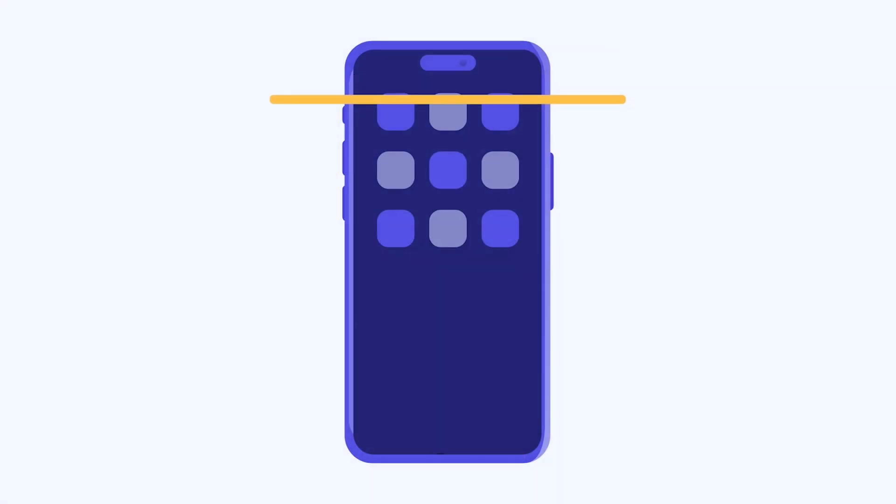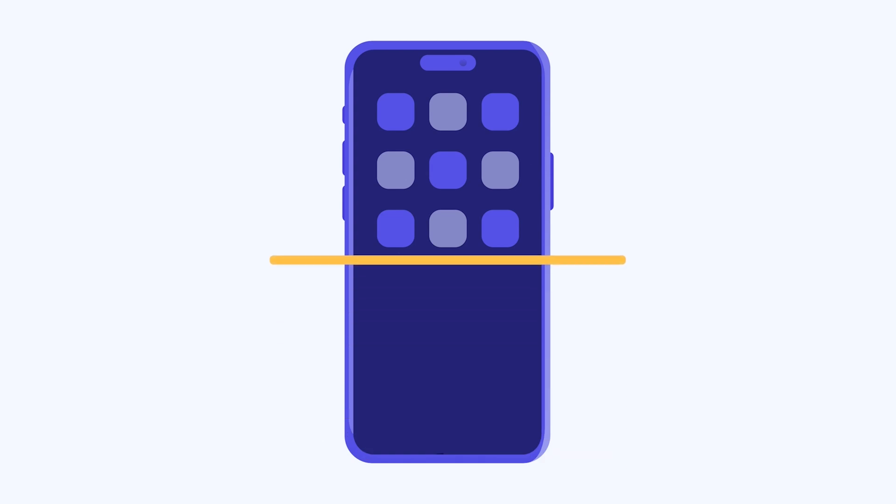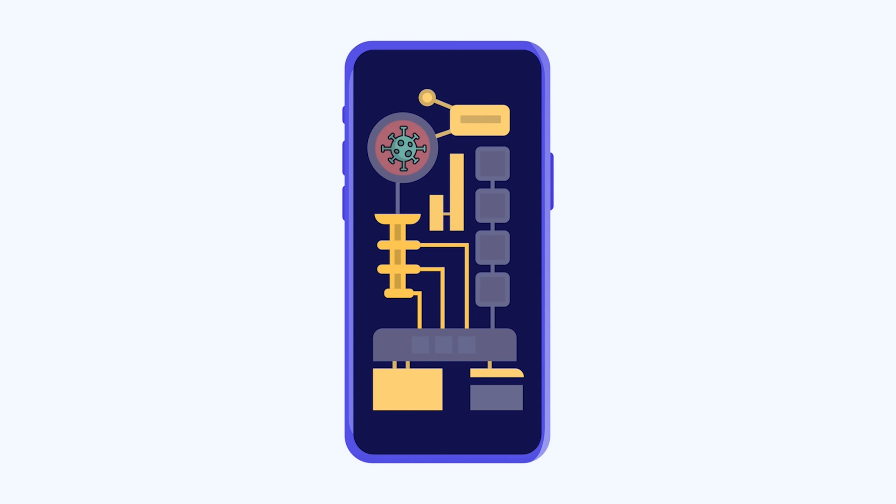First, let's talk about how to effectively scan your iPhone for viruses. The best way to do this is by using a reliable antivirus app. You might think that any antivirus app you download from the App Store will be sufficient, but it's crucial to choose an app that can perform what's called a deep scan. Due to Apple's sandbox restrictions, apps installed directly onto your iPhone can access certain areas of the device where viruses typically hide.